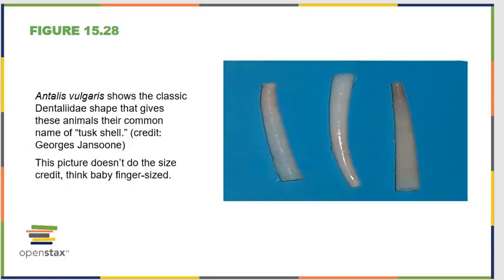A final group of mollusks are the tusk shells. These are really basic versions with the mouth end being the skinnier end. They tend to bury themselves in the sand in warmer waters and put out little tiny tentacles to filter feed. They represent a really simplistic version of the mollusk body plan.